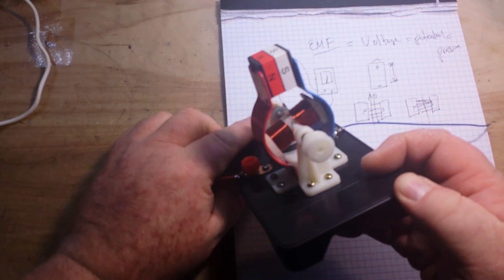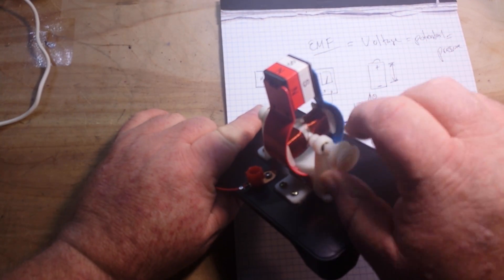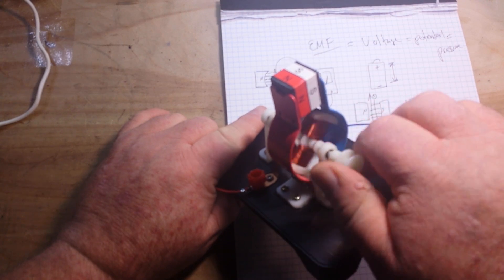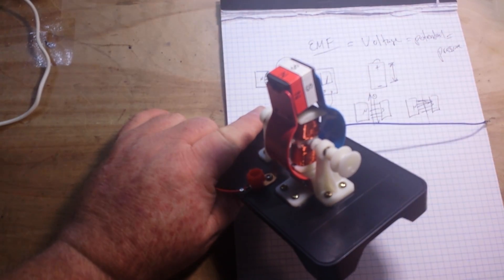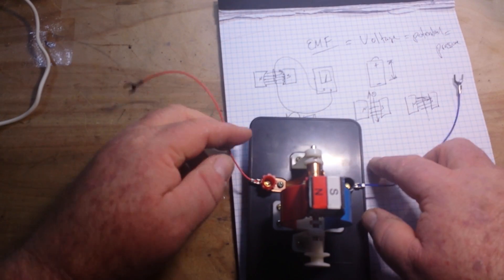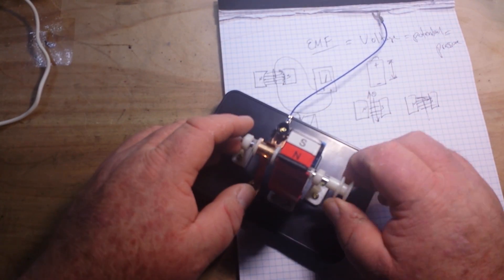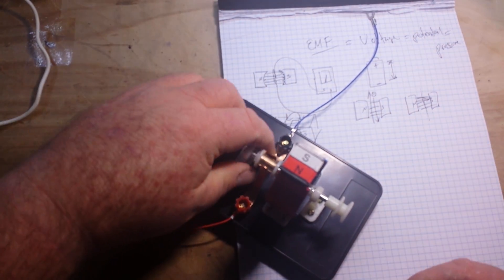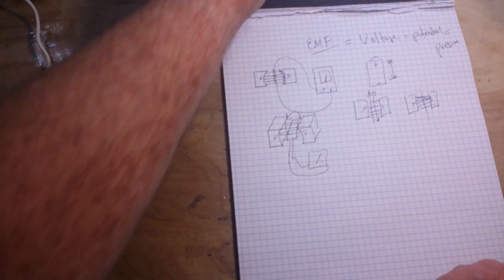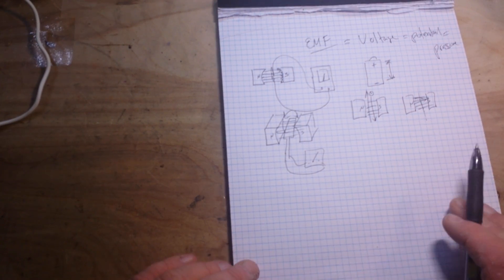And that is the basics of the electric motor, or the generator. Okay, if we apply a kinetic force to this setup, we have a generator. If we apply an electrical force to this setup, then it will turn with the electrical force, well then we have a motor. So you see, one is simply a mirror image of the other.